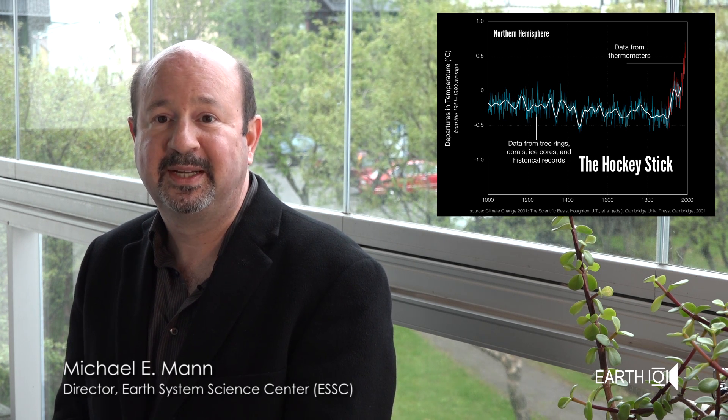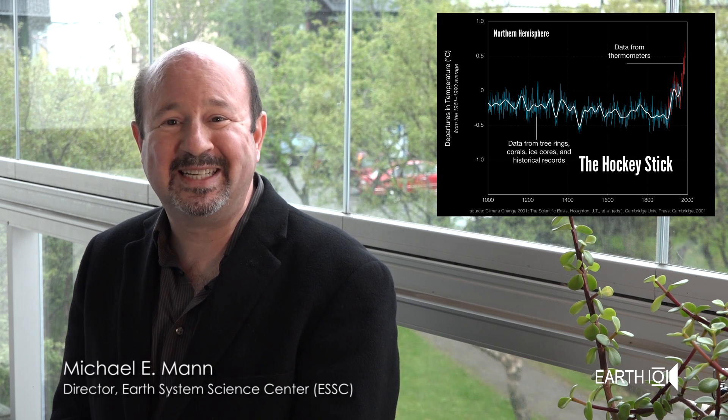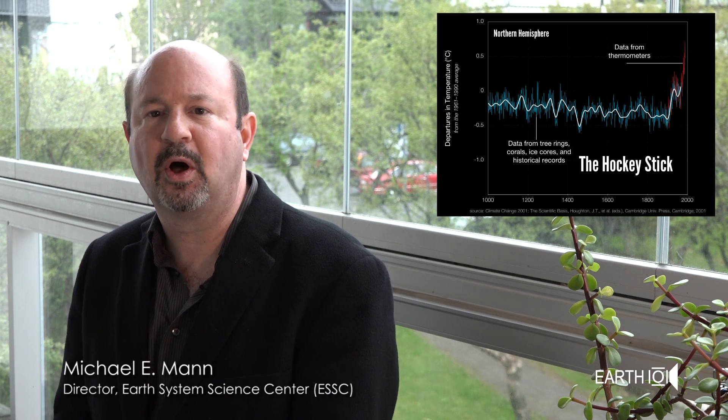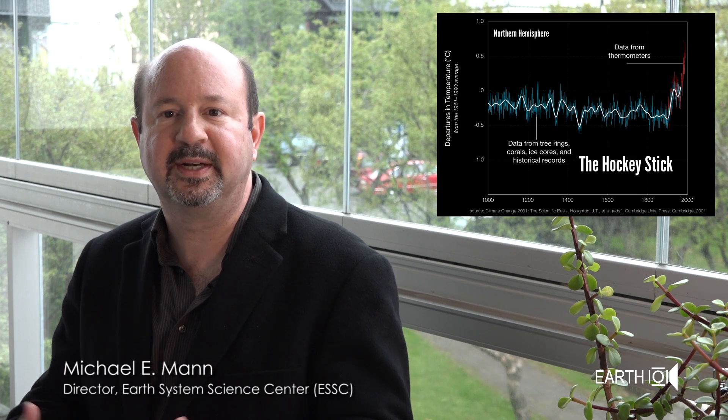The hockey stick graph is a graph that my co-authors and I published about a decade and a half ago that attempts to reconstruct how temperatures have varied over the past thousand years. We only have thermometer information that tells us about how global temperatures have changed during the past century or so. To get some idea of how unusual the warming trend of the past century is in a longer-term context, we have to turn to other lines of evidence from so-called climate proxy records like tree rings and corals and ice cores and sediments. We use the information in networks of these data to reconstruct past climate.